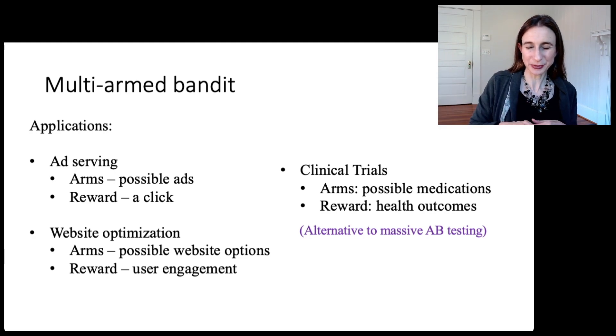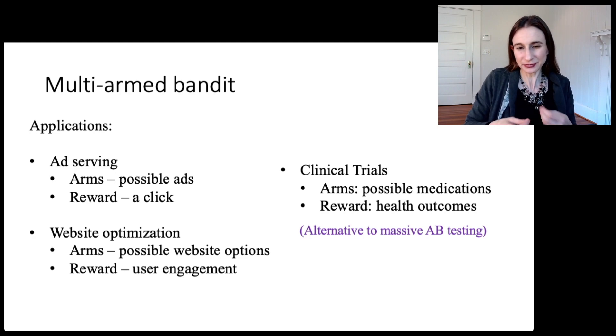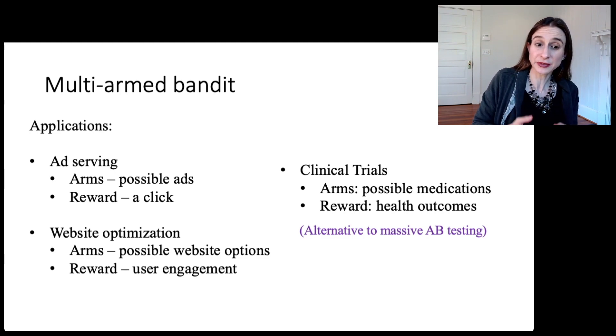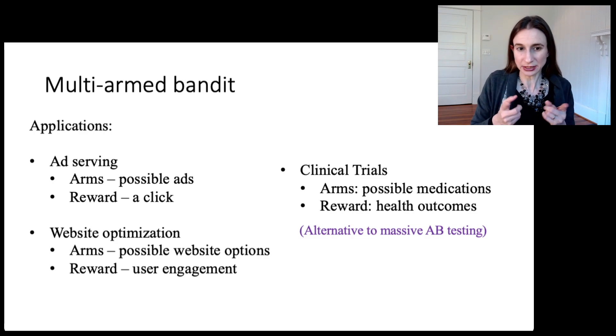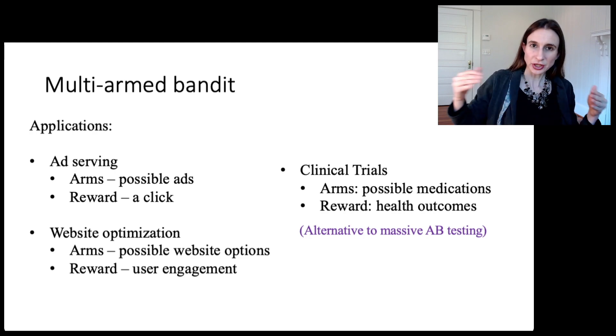Those drugs would disappear from the clinical trial. It would continue to exploit the drugs that it thinks are good, use those more often to try to figure out which of the remaining options are most effective. Multi-armed bandits are an alternative to massive AB testing because typically in a clinical trial, you would test out drug A versus drug B. But here you're trying all the drugs at once.